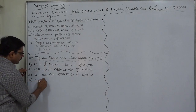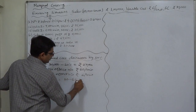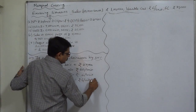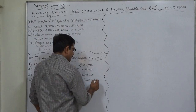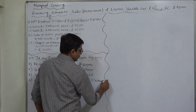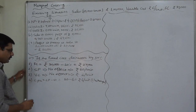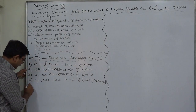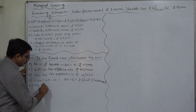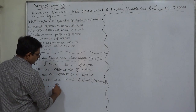Since there is no change in selling price or variable cost, the contribution per unit is also not going to change — it remains ₹10 minus ₹6, which is ₹4 per unit. Fixed cost has no direct role in the calculation of contribution per unit. Similarly, fixed cost has no direct role in the calculation of PV ratio, so PV ratio also remains unchanged.